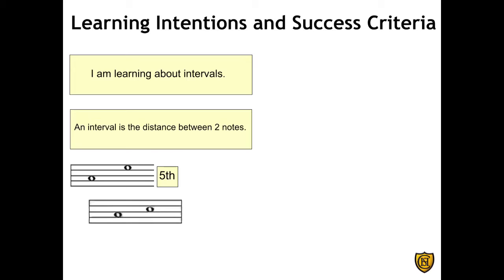In this example, again we have an A on the second space and our second note is a C on the third space. So let's use that same technique of going through the letters and holding our fingers up to identify the interval. A, B, C. And we're left holding three fingers up, which means that this is an interval of a third.